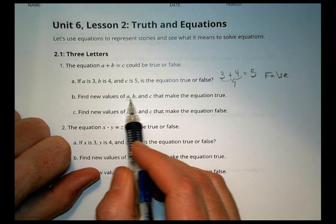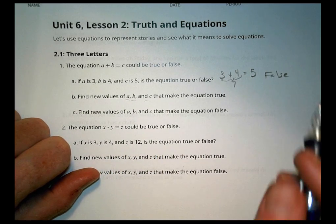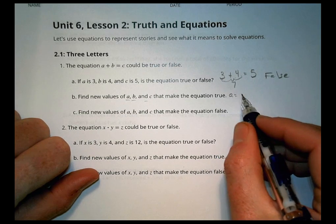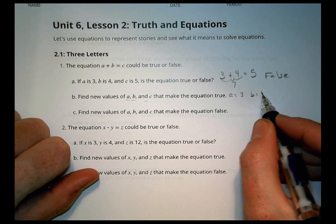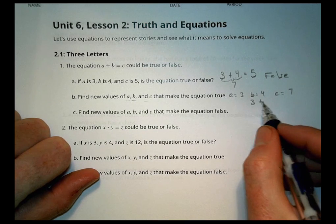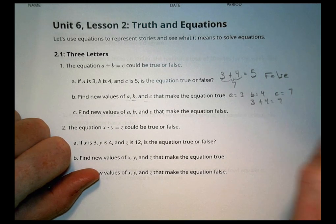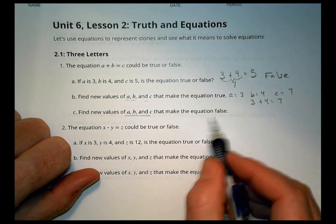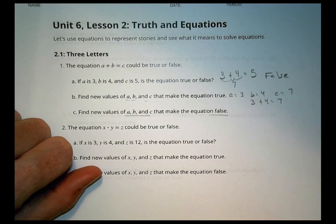Just because it has letters or variables doesn't mean that the variables are always going to work out the right way. You have to make sure it's going to be a true statement in order to be a real equation. If it's not, it's false and it just won't work out. It says find new values of A, B, and C that make the equation true. So you could say that A equals 3, B equals 4, and C equals 7. And that would be true because 3 plus 4 does equal 7.